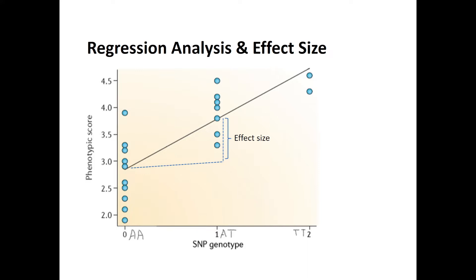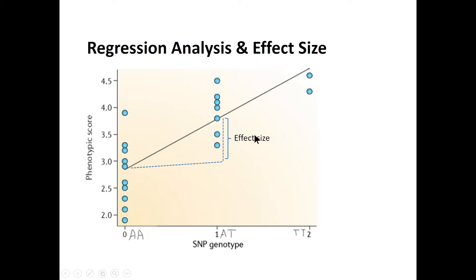That means the possible genotypes at that locus are AA, AT, and TT. Assuming that T is the minor allele, the frequency of the minor allele increases along the x-axis. AA is coded as 0, AT as 1, and TT as 2. Individuals at a locus with AA have their phenotypic score plotted, individuals with AT have their scores plotted, and those with TT as well. A best-fit line is drawn according to the regression analysis, and the effect size of the minor allele is computed together with the probability of this analysis.